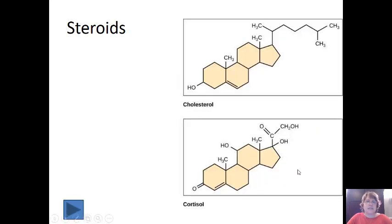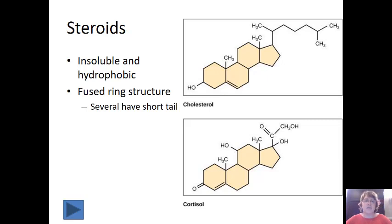The last group that we're going to talk about today is steroids. Steroids are insoluble and hydrophobic. That's really the only two aspects of them that make them fit into the lipid category, but they are really important in the lipid category. Most scientists do classify them as steroids instead of classifying them in their own group. They are all made of a fused ring structure. They typically have four rings. You can see in both these examples, the cholesterol and the cortisol, we have one, two, three, four rings. Several also have a short tail.